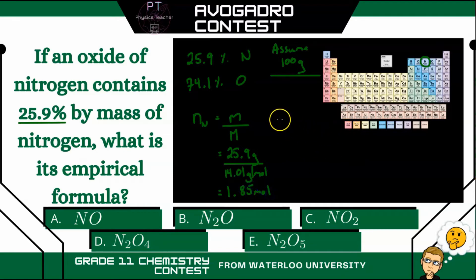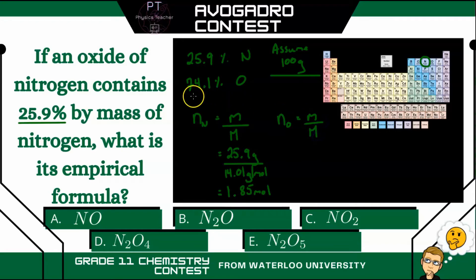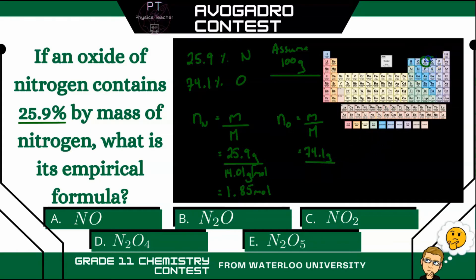Now we're going to look at oxygen — the number of moles for oxygen equals the mass of oxygen divided by its molar mass. Since it's 74.1%, 74.1% of 100 grams is simply 74.1 grams. Divided by its molar mass of 16.00 grams per mole, that gives us 4.63 moles.